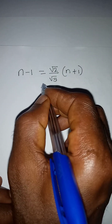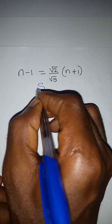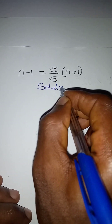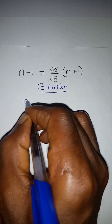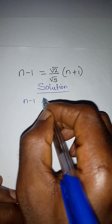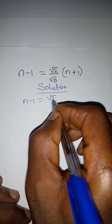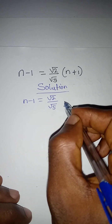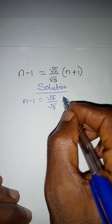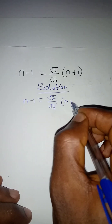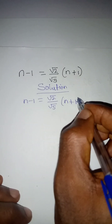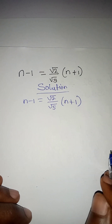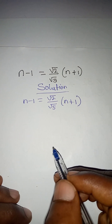Hello everyone, let's solve this problem quickly. n minus 1 equals square root of 2 over square root of 5, into n plus 1, and we are looking for the value of n.